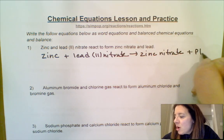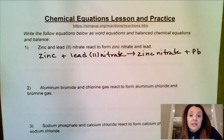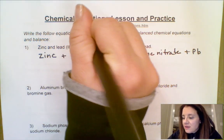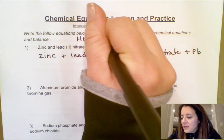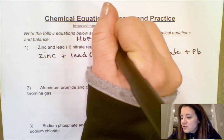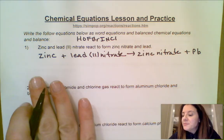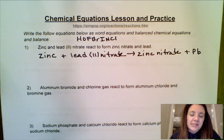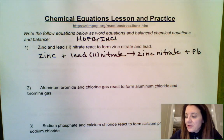Now we want to watch out for any of our diatomic molecules — the HOFBrINCl elements: hydrogen, oxygen, fluorine, bromine, iodine, nitrogen, and chlorine. If any of those appear, we have to make sure in our balanced equation that we double them up and put a subscript of two. But zinc and lead are neither of those.